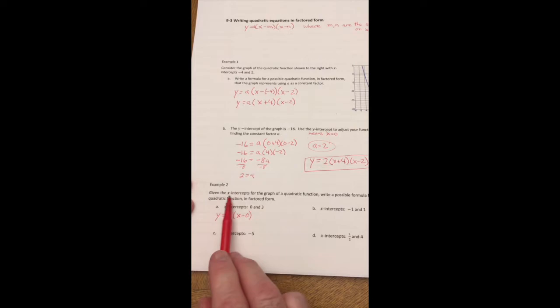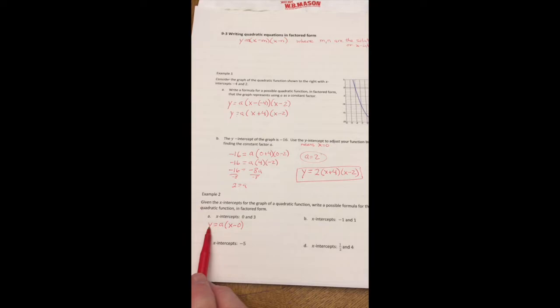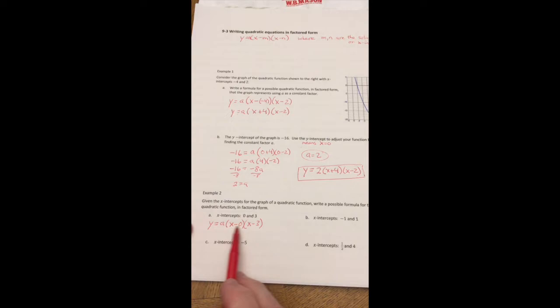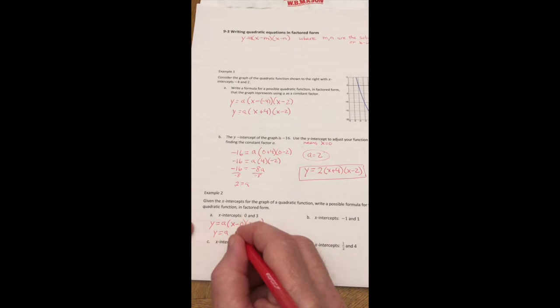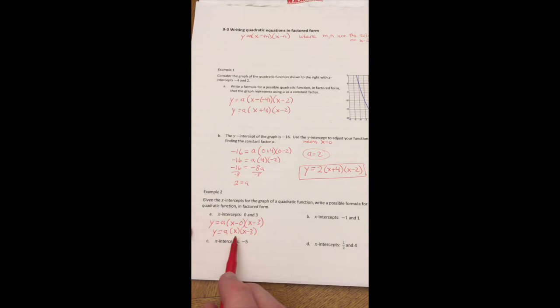For example 2, I have it started here, but we're going to run through this. Given the X intercepts, write a possible formula for the quadratic function. This just goes back to the basic part. We don't need as much detail if we don't know the Y intercept. So for the X intercepts, the formula is just going to be Y equals A, some number there, X minus the first X intercept, and X minus the second X intercept. And that's all we need for these ones. With X minus 0, I would probably rewrite it. You can leave it that way, but I would just write A times X times X minus 3. But it's okay to leave the X minus 0 in there. They're both acceptable.